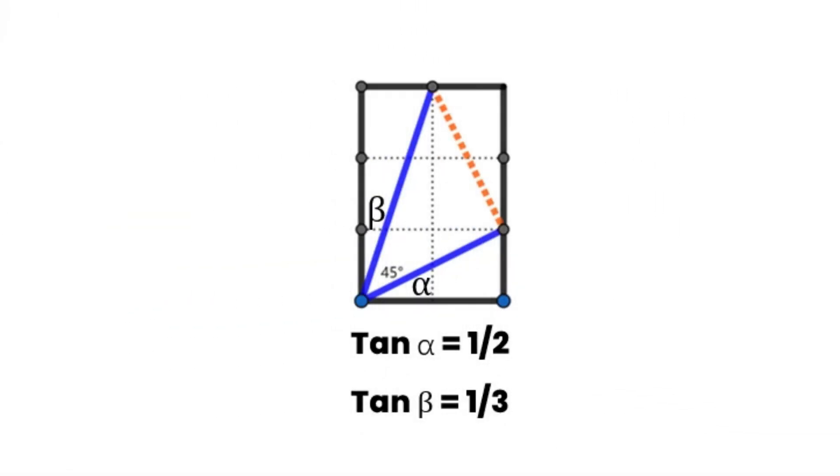There is a principle: when tangent alpha is 1 over 2 and tangent beta is 1 over 3, alpha plus beta is 45 degrees.